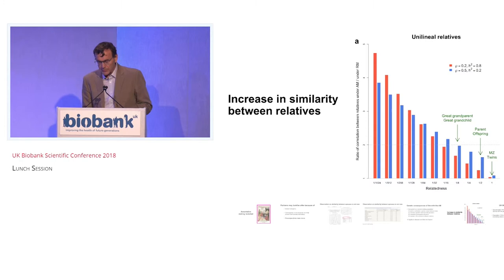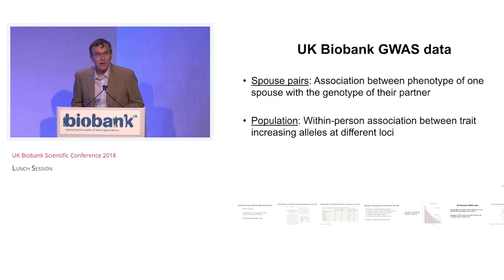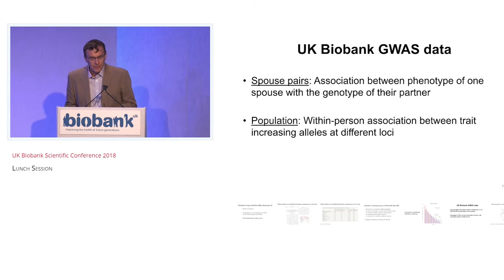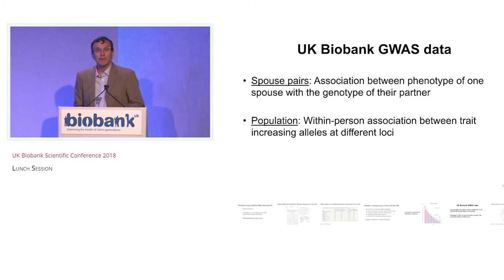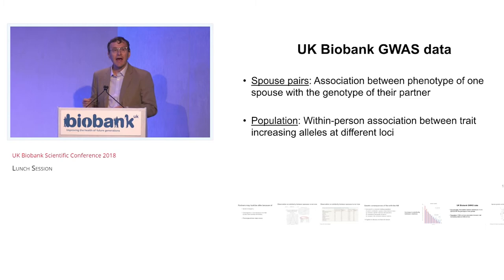Let's go to what we did with the UK Biobank data. We approached the question of assortative mating and its consequences in two ways. First, we ascertained spouse pairs — about 20,000 in the full release — and looked at the association between the phenotype of one spouse and the genotype of their partner. In the second design, we took the genetic data from the UK Biobank as a sample of 500,000 genomes from the population, and looked at the correlation of trait-increasing alleles at different loci in the genome, because assortative mating predicts that there will be such a correlation.